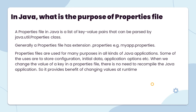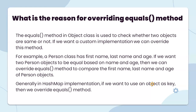Some uses are to store configuration, initial data, application options, etc. When we change the value of a key in a properties file, there is no need to recompile the Java application, so it provides the benefit of changing values at runtime. This is the use of property files.